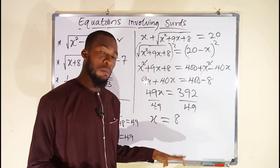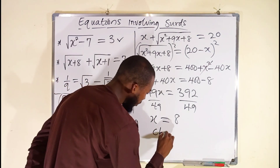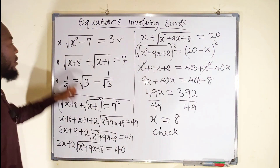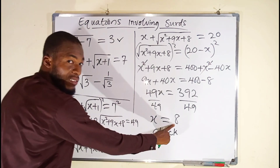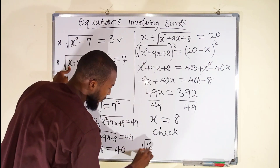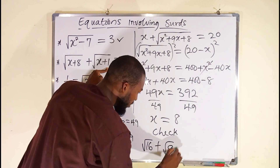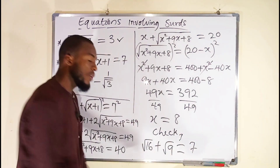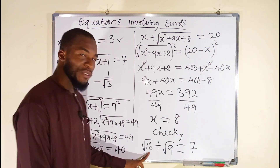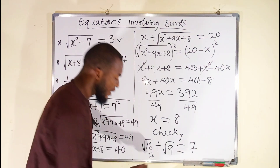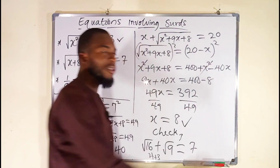x equals 8. But we have to check whether this is our real solution. Substituting x equals 8 into the original equation: square root of 8 plus 8 plus square root of 8 plus 1. That is square root of 16 plus square root of 9. Is this equal to 7? Square root of 16 is 4 and square root of 9 is 3. Is 4 plus 3 equal to 7? Yes, definitely. So 8 is our solution.